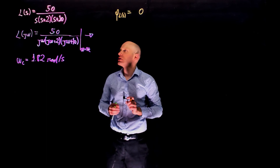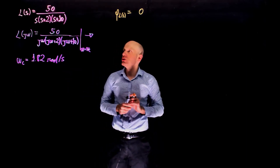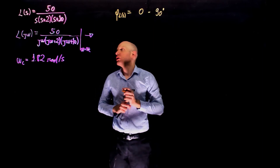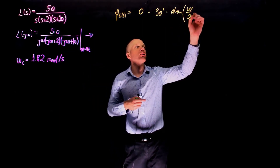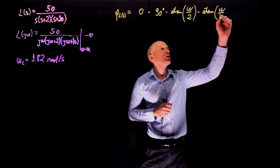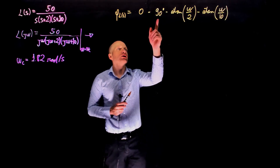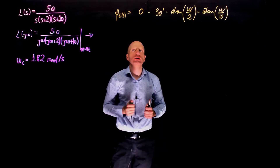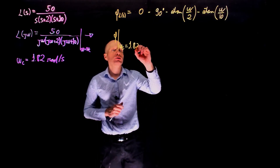The phase of L of s is defined as the sum of the angles of all zeros minus the sum of the angles of all poles. We have no zeros, so the phase contribution from zeros is zero. We have three poles. The phase of the pole at the origin is negative 90 degrees. The phase of the pole at 2 is arctan of omega divided by 2. The phase of the pole at 10 is arctan of omega divided by 10. The pole at the origin sits on the imaginary axis, so it contributes negative 90 degrees.